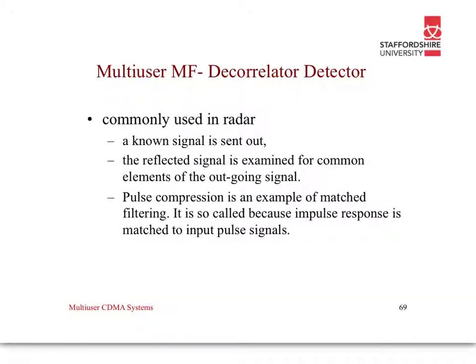Where are decorrelator detectors used? They're commonly used in radar because we send a known signal out, a signal is reflected and returns to the transmitter, and we examine the differences and how similar it is to the outgoing signal — has the frequency changed, how has the amplitude changed, are we looking for Doppler frequencies? Pulse compression is an example of matched filtering; it is also called that because the impulse response is matched to the input pulse signals.